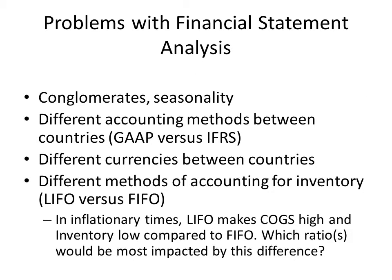We'll finish this lecture with a brief review of some problems with financial statement analysis. First, conglomerates don't lend themselves easily to financial statement analysis. We can only really compare firms within the same industry, and conglomerates by definition are made up of divisions from many different industries. One would have to find a conglomerate with exactly the same composition of investment in exactly the same industries to compare between two companies — and this is almost impossible. Financial statement analysis for comparison purposes is lousy for conglomerates.